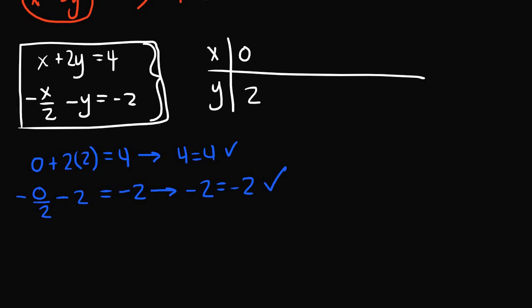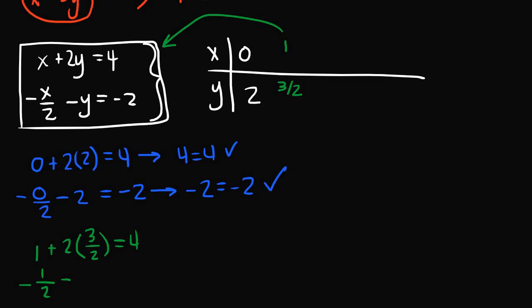Let's try another solution set: x equals 1 and y equals 3 over 2. For the first equation: 1 plus 2 times 3 over 2 equals 1 plus 3 equals 4. For the second equation: negative 1 half minus 3 halves equals negative 2, which equals the right-hand side. This solution set also works.